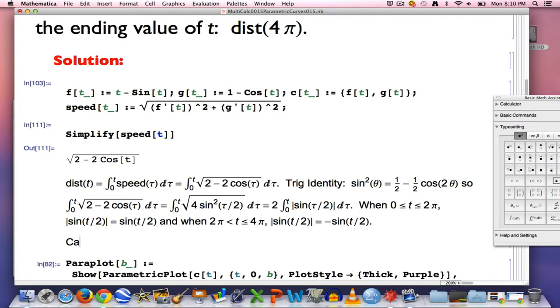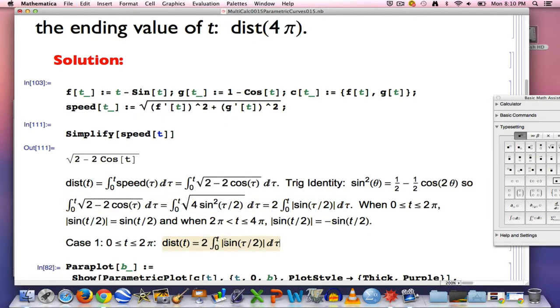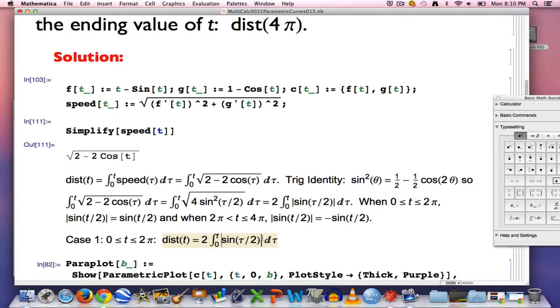Let's do case 1. t is between 0 and 2π. That will be the easy case. The distance traveled, dist(t), will equal, in that case, this, well, in other cases, it will equal this integral. But, in this case, you can get rid of the absolute value of sine. And this is a fairly easy integral to do. You'll get negative 4cos(τ/2), where τ goes between 0 and t.